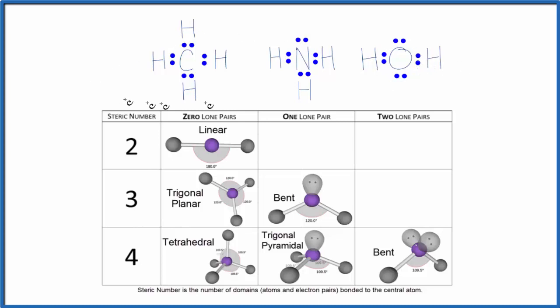We have Lewis structures here, and Lewis structures are good. They give us an idea where the electrons and atoms are arranged around an atom, but they're very two-dimensional. They don't tell us a lot about the molecular geometry or shape of these molecules.